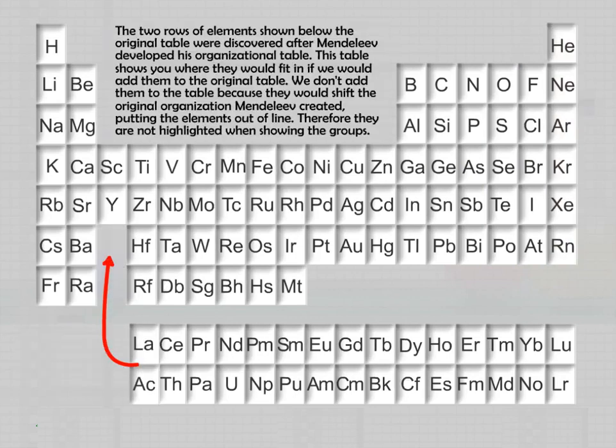The two rows of elements shown below the original table were discovered after Mendeleev developed his organizational table. This table shows you where they would fit in if we would add them to the original table. We don't add them to the table because they would shift the original organization Mendeleev created, putting the elements out of line. Therefore, they are not highlighted when showing the groups.